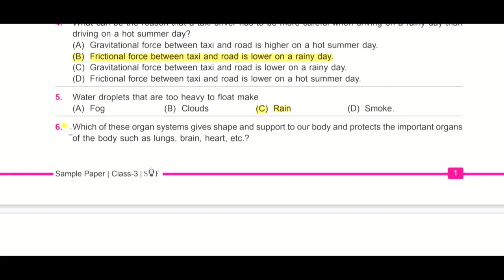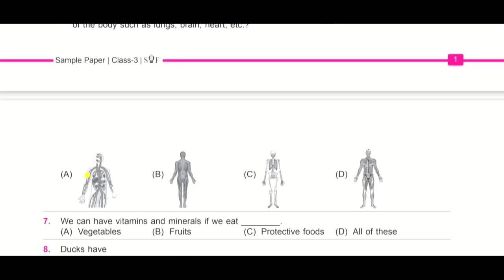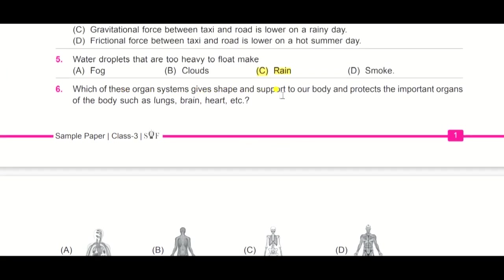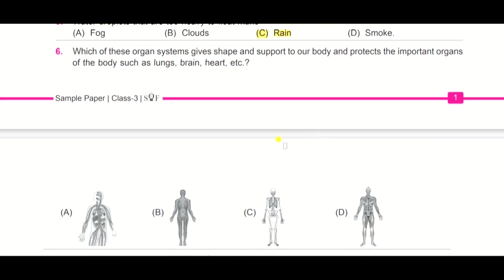Question number six: which of these organ systems gives shape and support to our body and protects the important organs of the body such as lungs, brain, heart, etc.? Look at the organ systems here, option A, B, C, D. I will repeat the question for you: which of these organ systems gives shape and support to our body and protects the important organs of the body such as lungs, brain, heart, etc.? And the answer is C, skeletal system. This is a skeletal system. It gives shape and support to our body and it also protects the important organs.